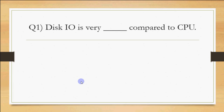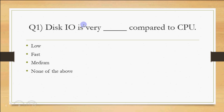First question: disk input-output is very blank compared to CPU. Options are low, fast, medium, or none of the above. This is about speed. Disk and other input-output devices like printers and keyboards are electromechanical devices, while the CPU is an electronic device. Electronic devices are much faster than electromechanical devices. This is why disk input-output speed is very low compared to the CPU. So the answer is low.